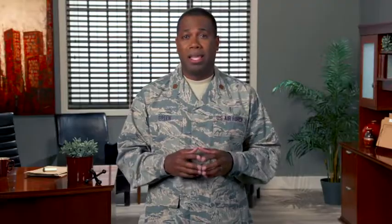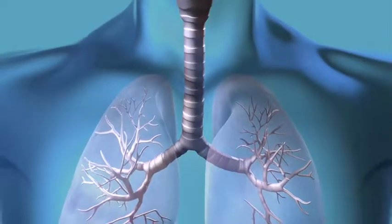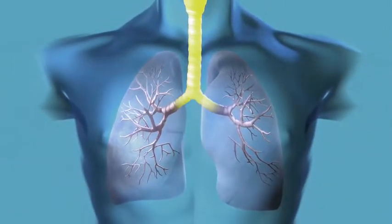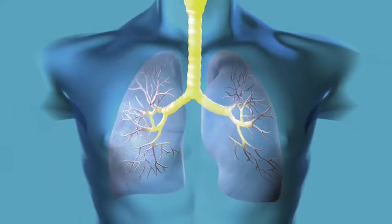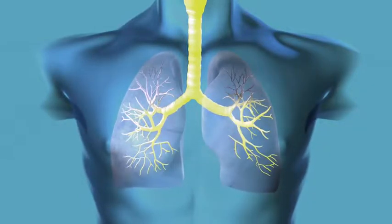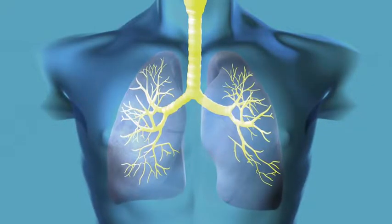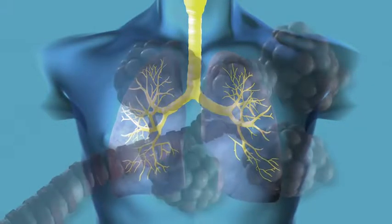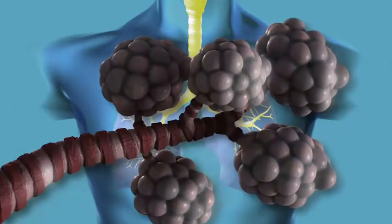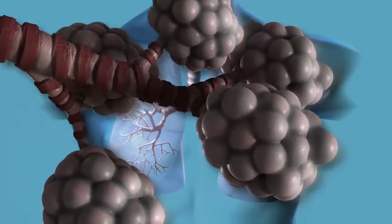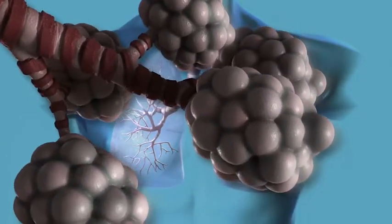The air is then transported through the trachea and bronchi to smaller airways called bronchioles. These airways have branches like a tree so that millions of small airways can carry oxygen to tiny air sacs called alveoli.